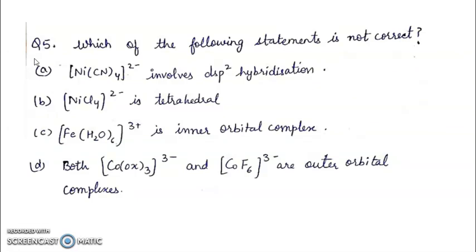Question 5. Which of the following statement is not correct? A. Ni(CN)4 2- involves dsp2 hybridization. B. NiCl4 2- is tetrahedral. C. Fe(H2O)6 3+ is inner orbital complex. D. Both Co(ox)3 3- and CoF6 3- are outer orbital complexes. We have to find the not correct statement and that statement is C. Because this given compound is outer orbital complex.